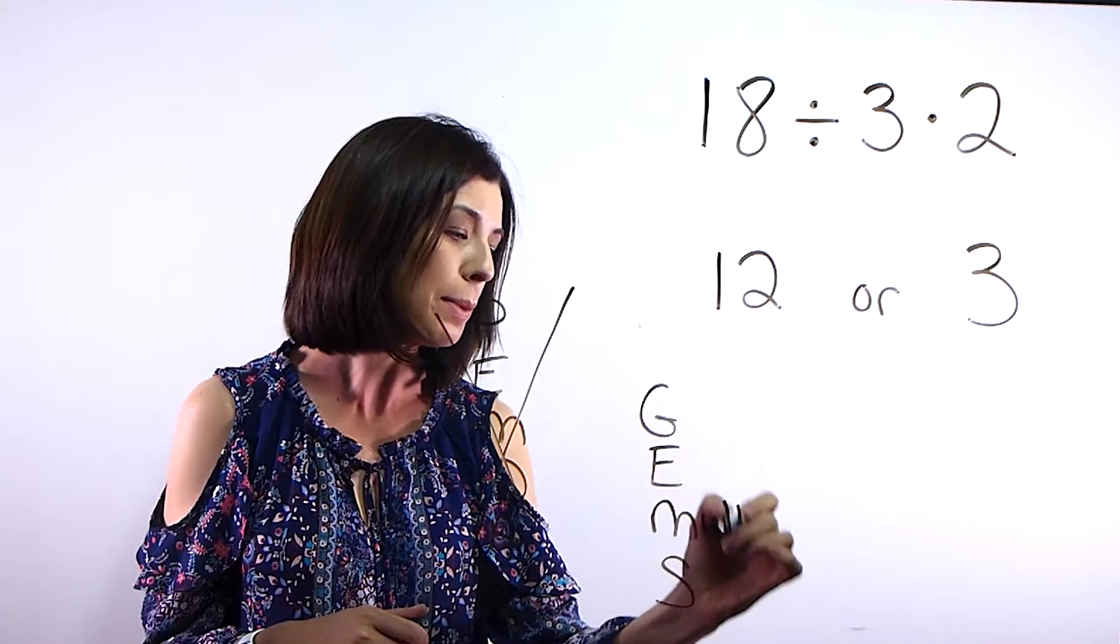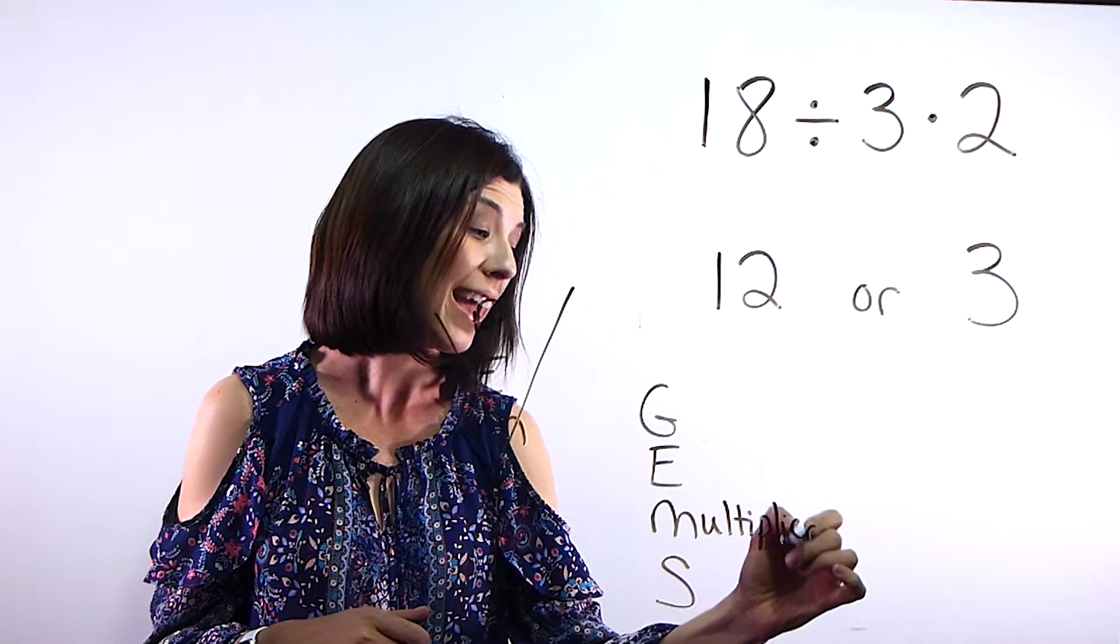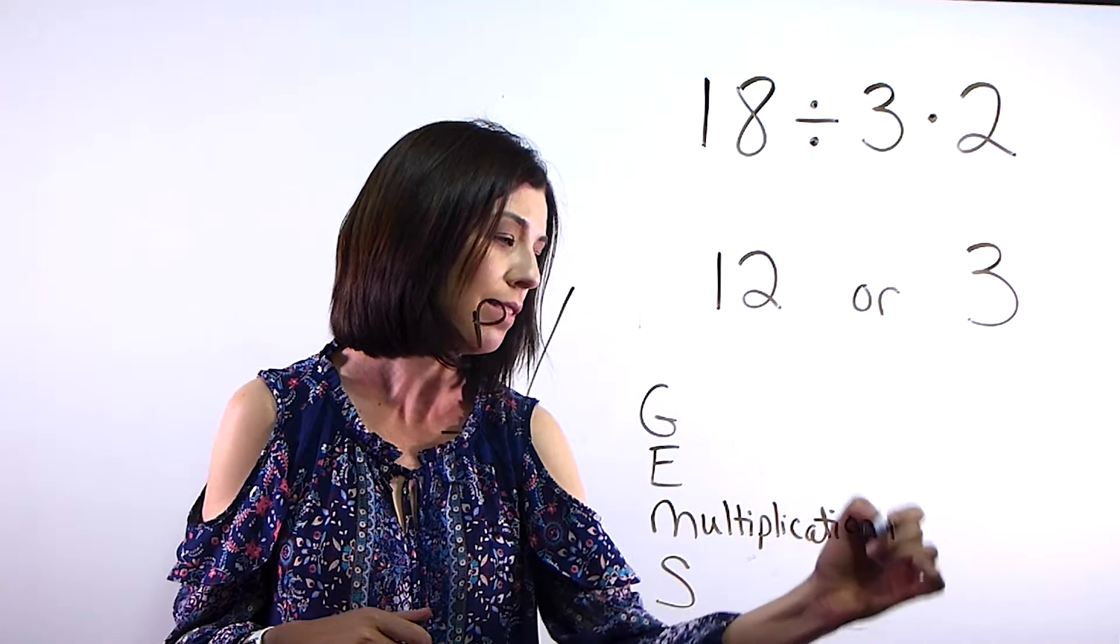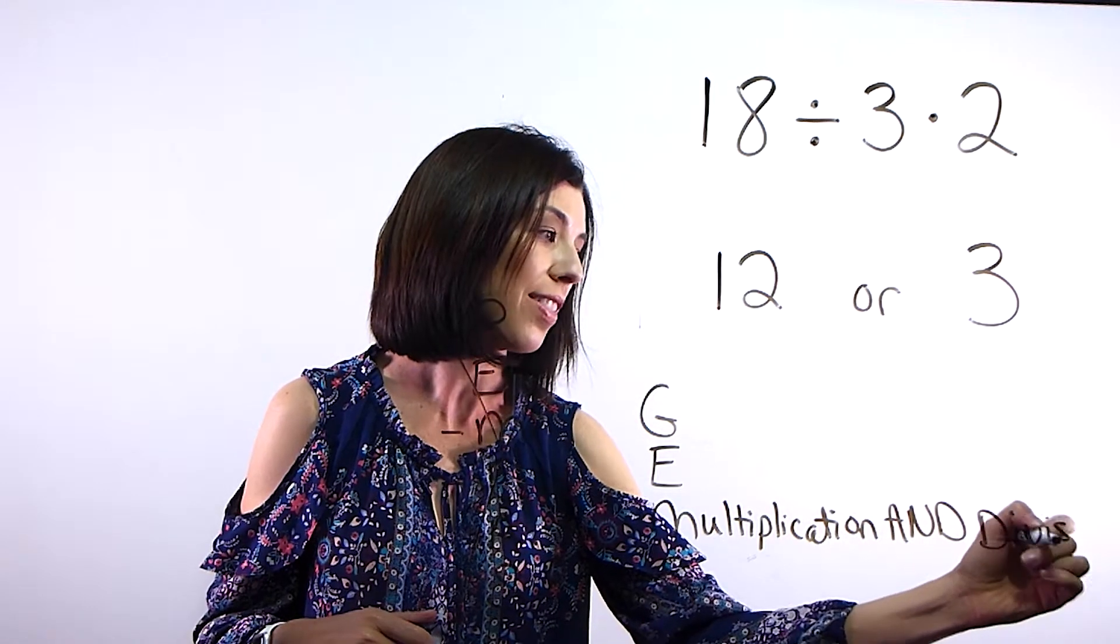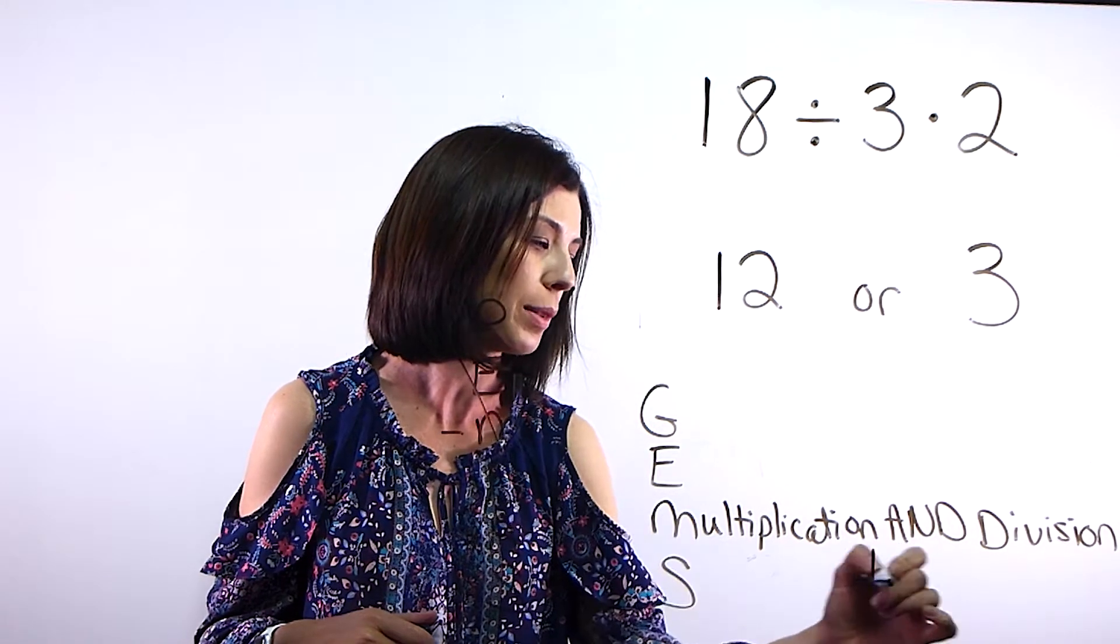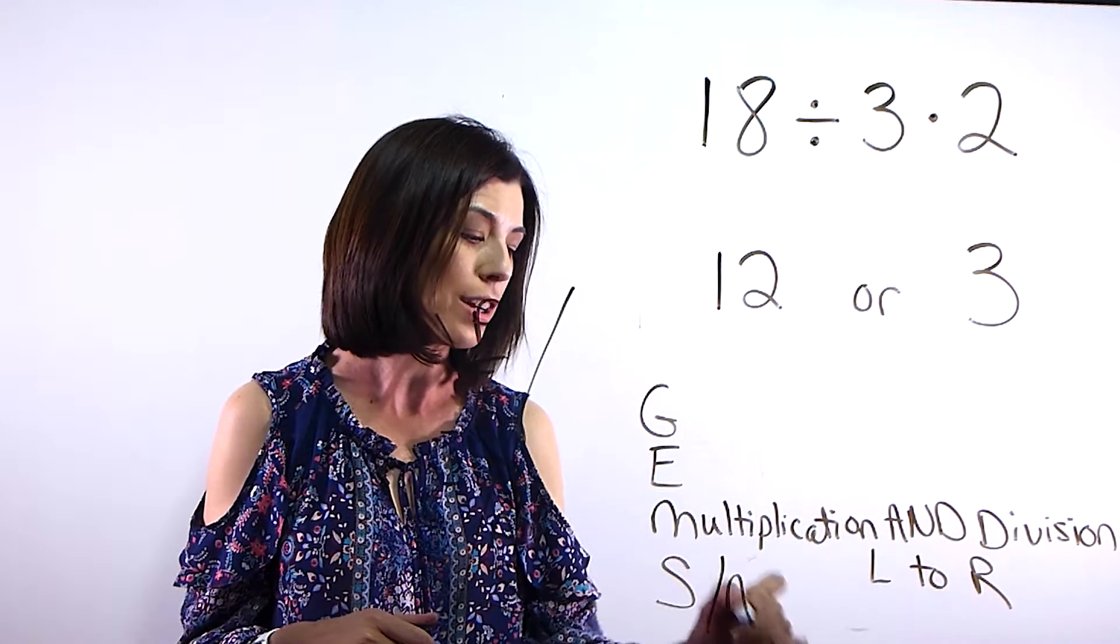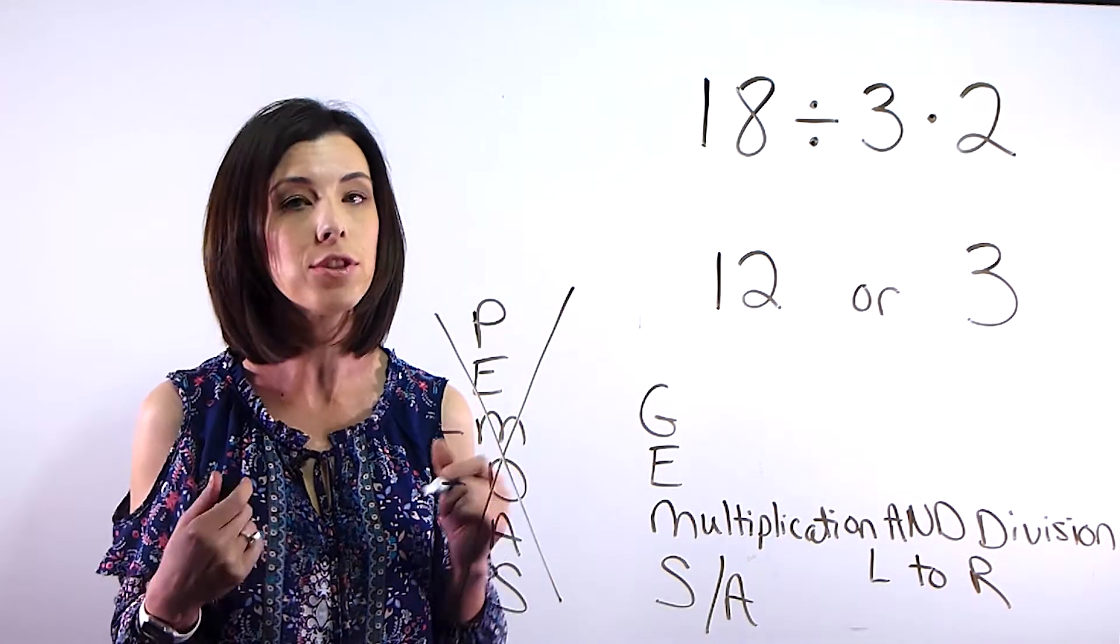The M stands for multiplication and division from left to right. That is the tricky part. So from left to right. Same with subtraction and addition. You're going to go from left to right.